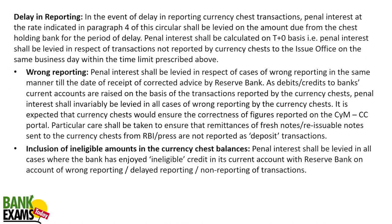In case there is a delay in reporting of Currency Chest transactions, penal interest will be levied. Penal interest shall be calculated on a T+0 basis. In case of wrong reporting, penal interest shall be levied in respect of cases of wrong reporting of transactions, in the same manner, till the receipt of corrected advice by RBI. In case of inclusion of ineligible amounts in the Currency Chest balance, penal interest shall be levied in all cases where the bank has enjoyed ineligible credit.